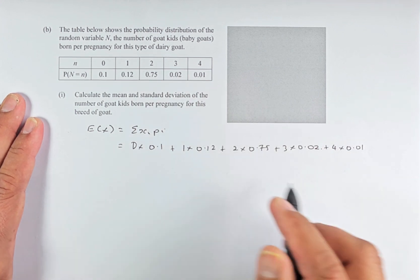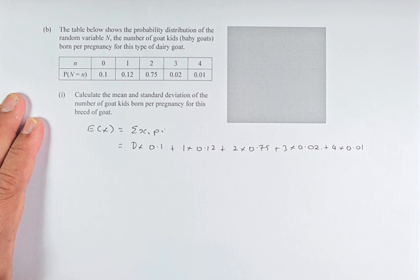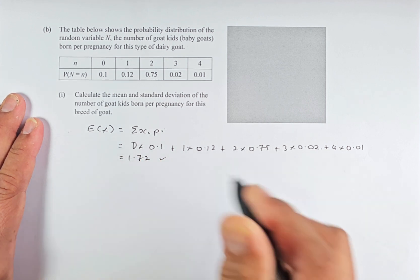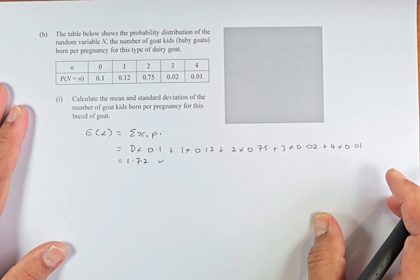So we're going to multiply all of them and if you put in your calculator, the answer is going to be 1.72. That is how you calculate the mean or the expected value.